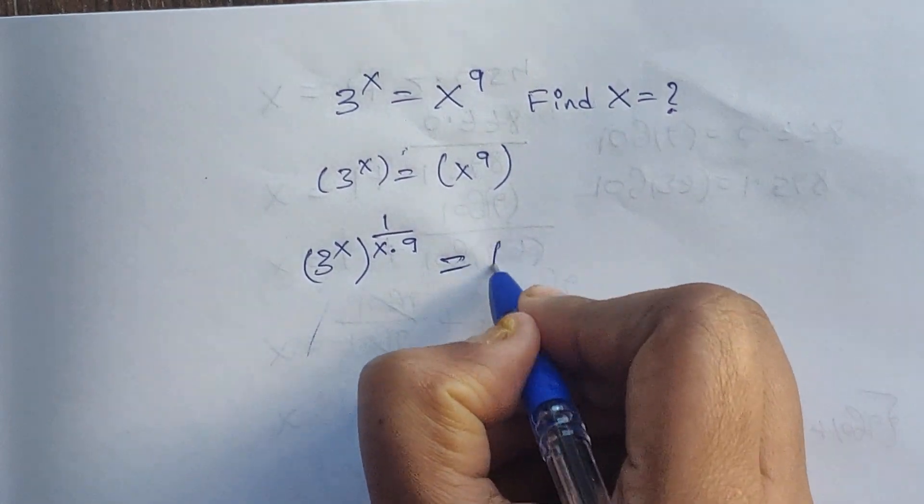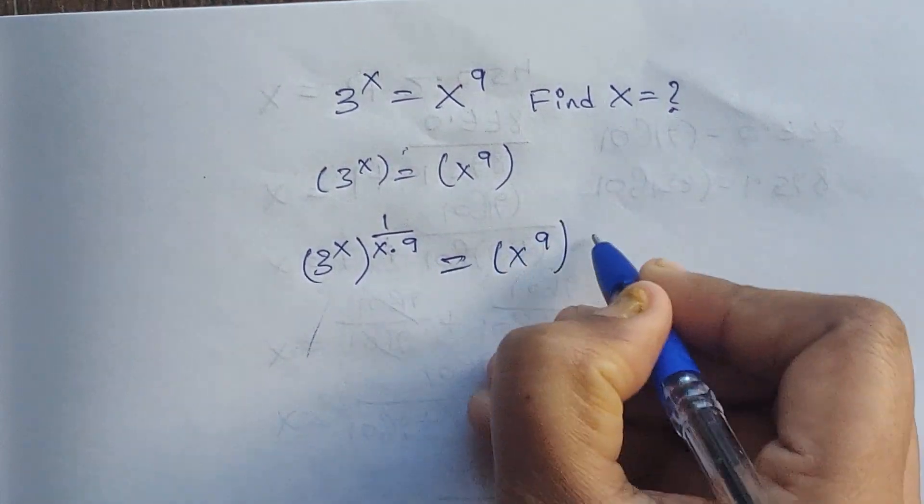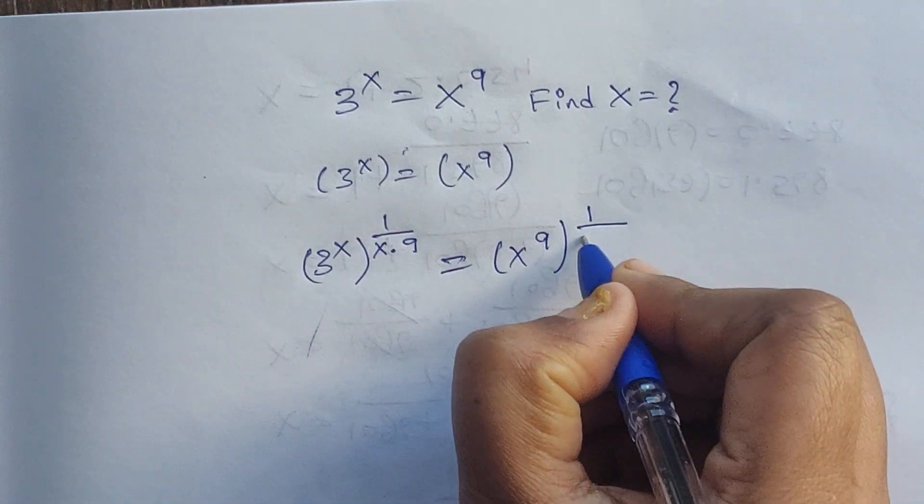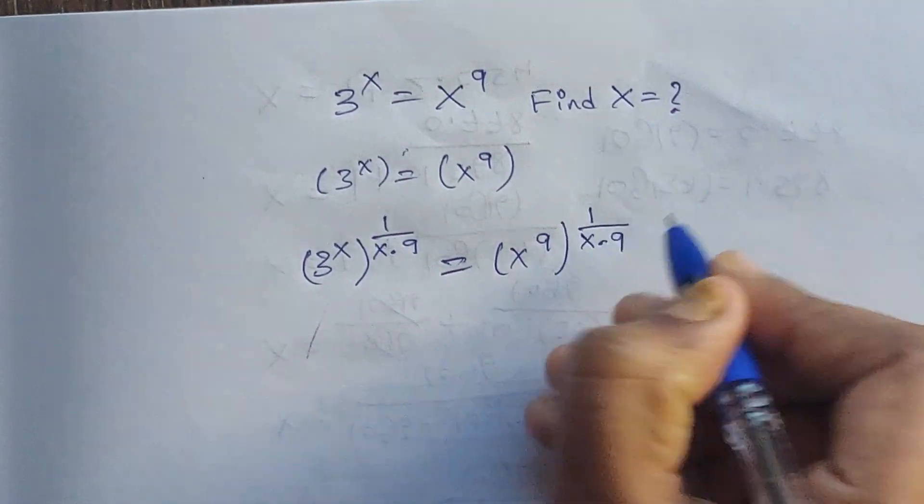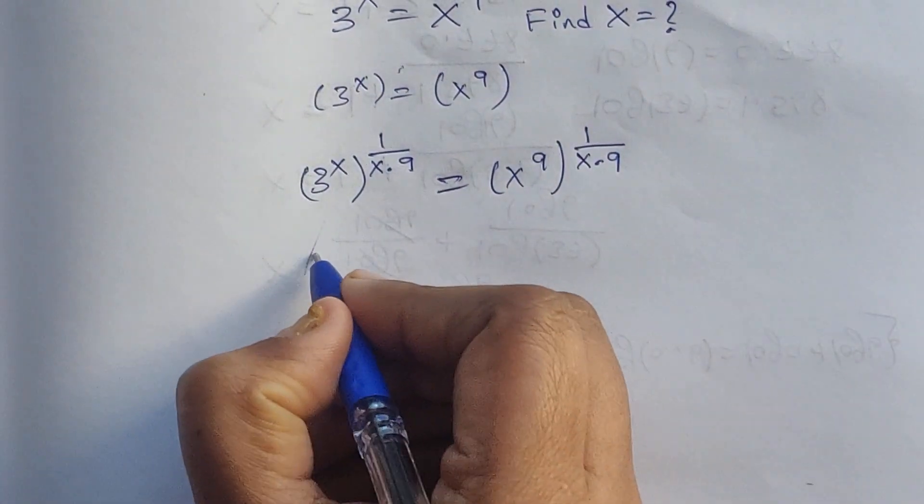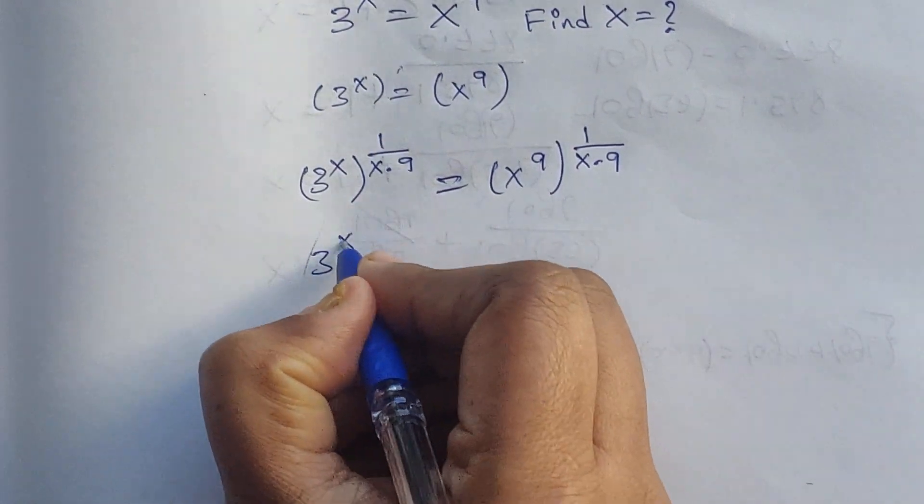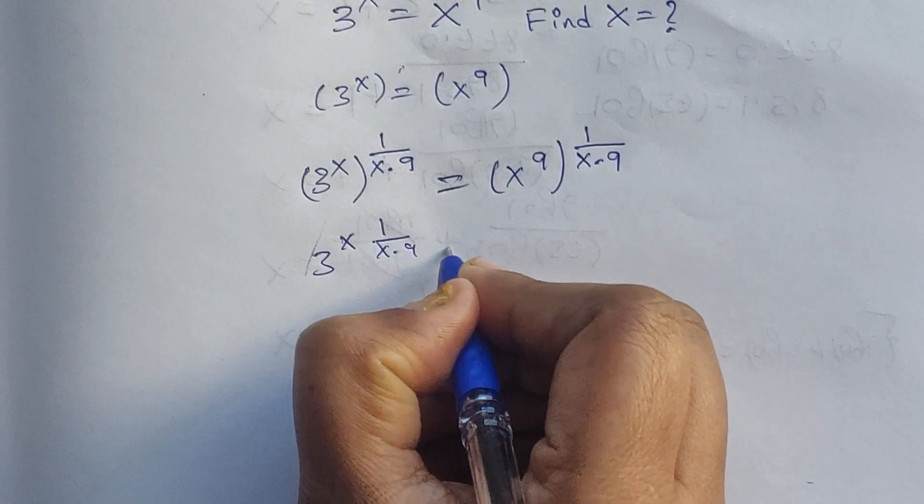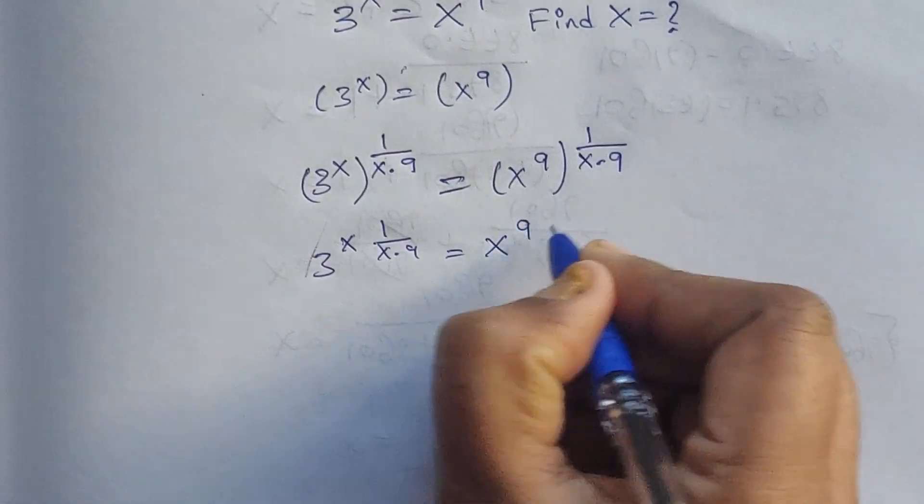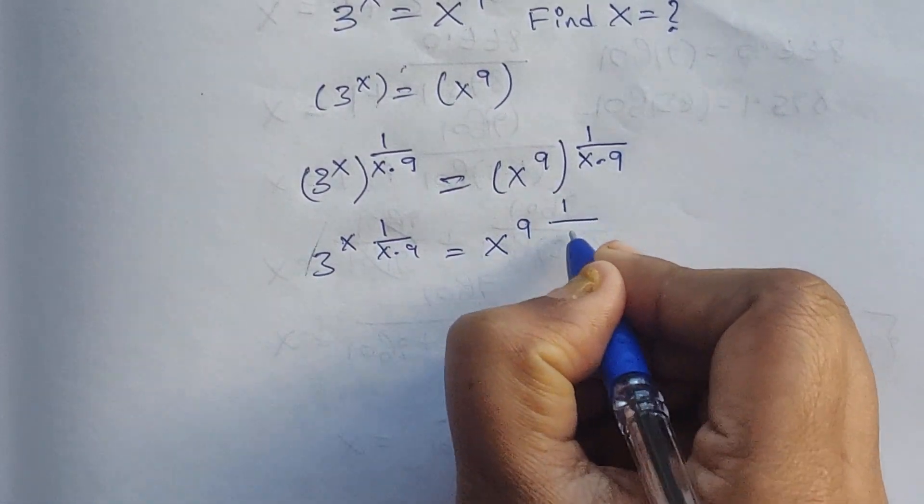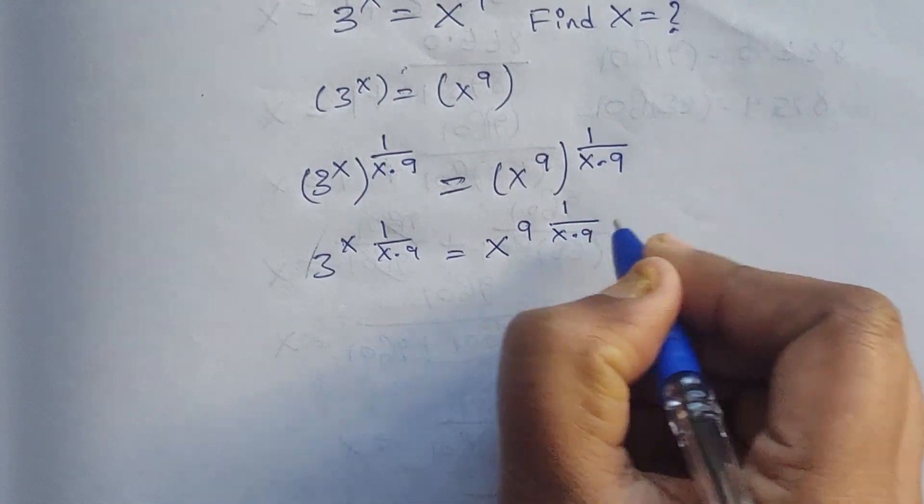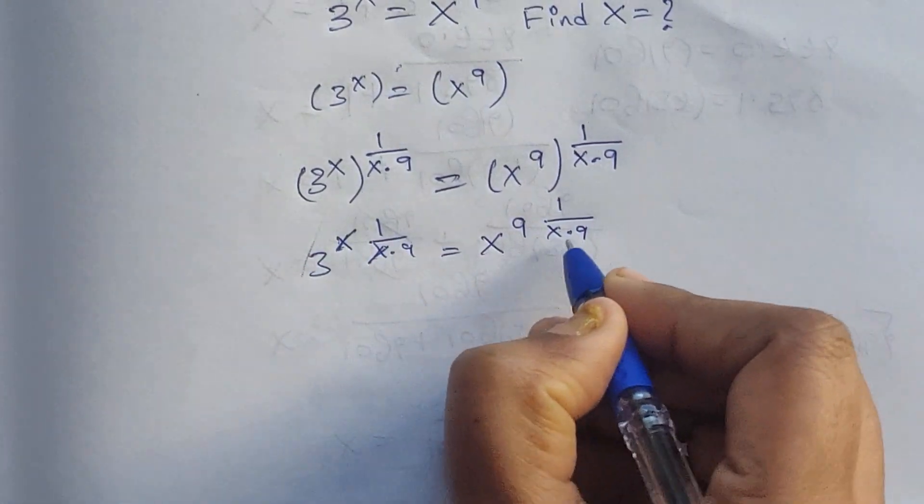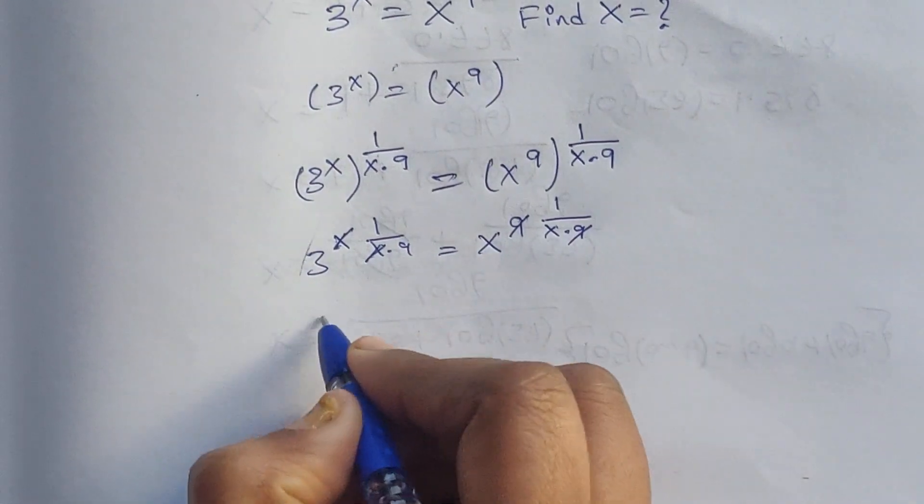So we have x to the power of 9, whole to the power of 1 divided by x times 9, and 3 to the power of x times 1 divided by x times 9, equals x to the power of 9 times 1 over x times 9. The x's get cancelled and the 9's get cancelled.